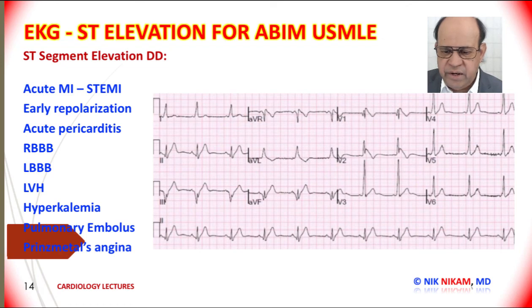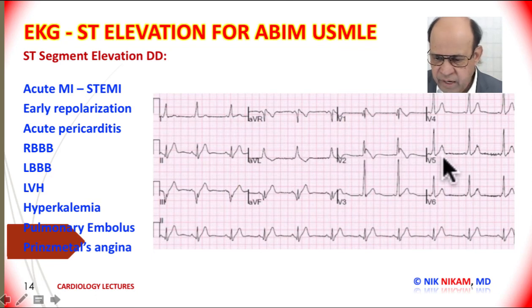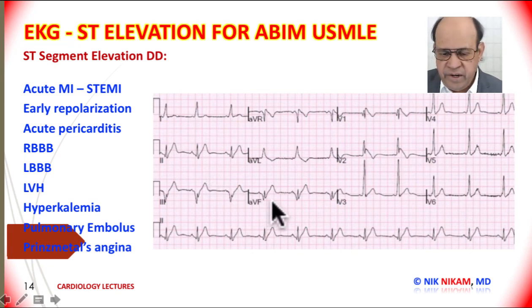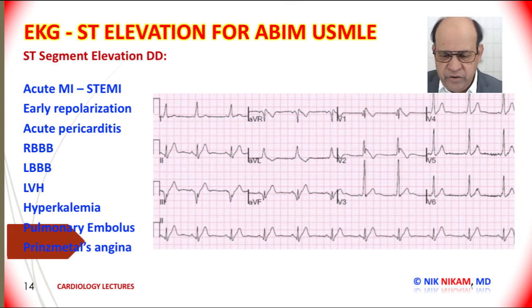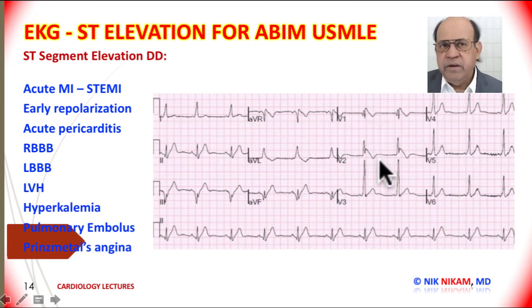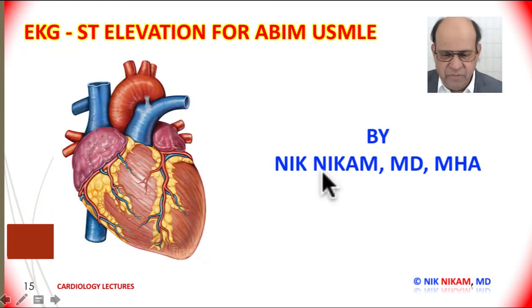What is your diagnosis here? We have a short PR interval and a delta wave, very clearly seen in the lateral chest leads. We have QS complexes in leads 3 and AVF, and then ST segment elevation. We are dealing with Wolff-Parkinson-White syndrome. WPW syndrome can present with a short PR interval, delta waves, and sometimes ST segment elevation in various leads, along with Q waves in the inferior leads and tall R waves in the anterior leads — all variations of WPW.